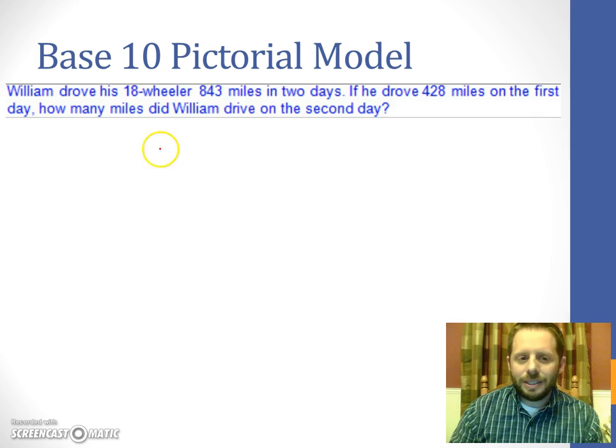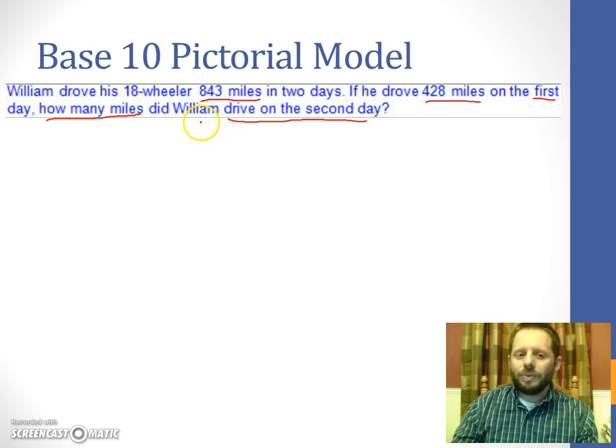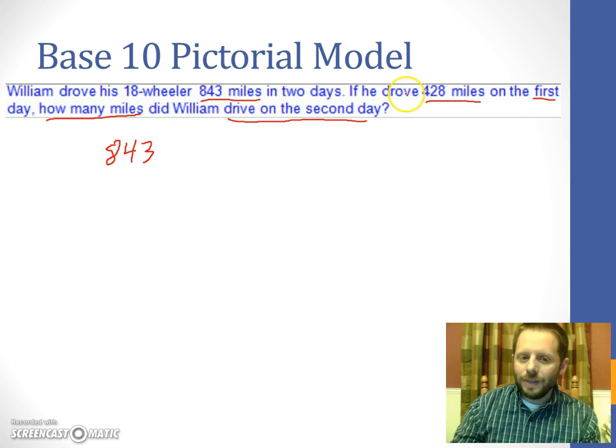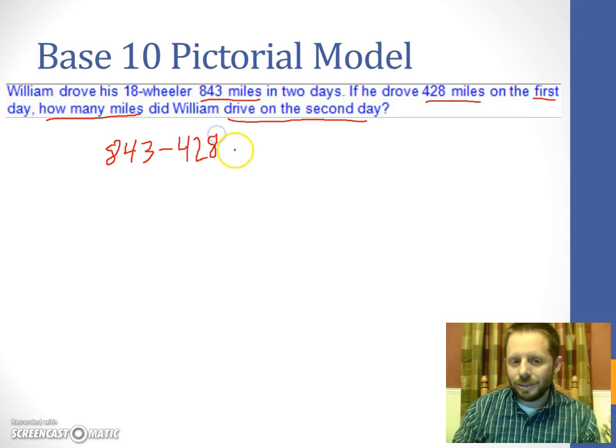Here's one more base 10 model. This one says William drove his 18 wheeler for 843 miles in two days. He drove 428 miles on the first day. And the question is how many miles did he drive on the second day. So for this one, you have a total number of miles that he drove over the course of two days. And we know the distance he drove on the first day, we want to remove that from the 843 miles so that we can see how many miles were driven on the second day. So this one is modeled by a subtraction problem.